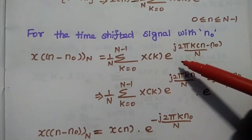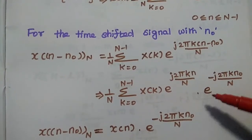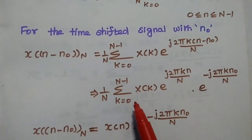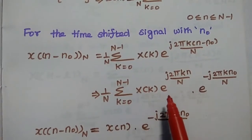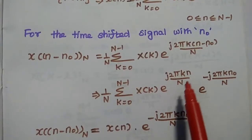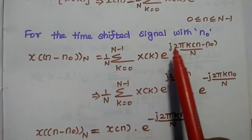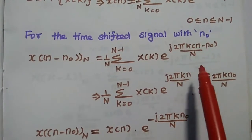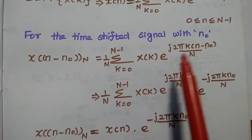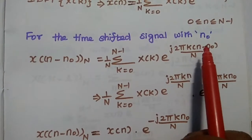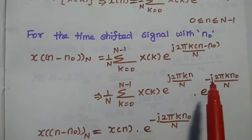In the next step, we multiply the exponential term inside the bracket. Then we get (1/N) summation k=0 to N−1 of X(k) × e^(j2πkn/N) multiplied with e^(−j2πkn₀/N).